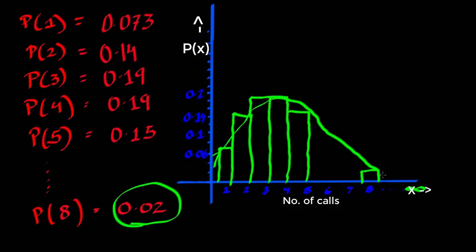And we can assume after eight calls, the probability is reaching a value that is close to zero. So we can assume a graph something like that. So this is how a Poisson distribution graph looks like.